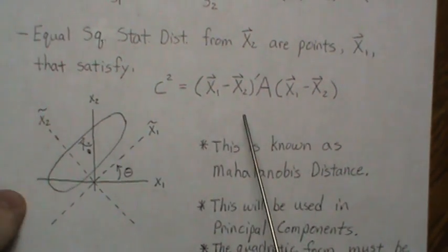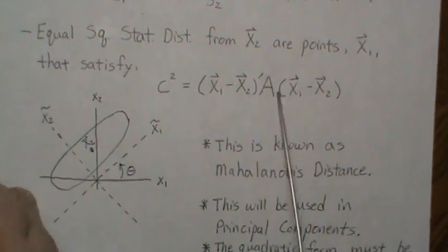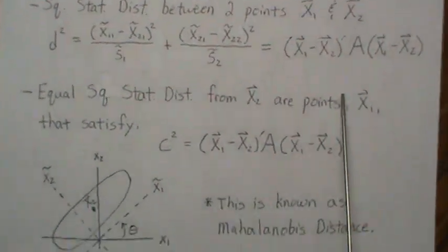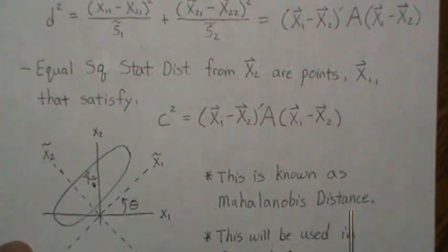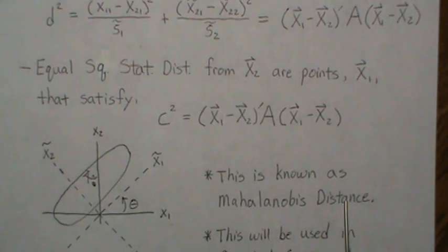Now, these statistical distances here, and even this one, those are called Mahalanobis distance. And it's very important in statistics.